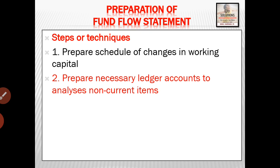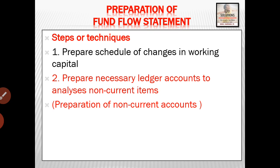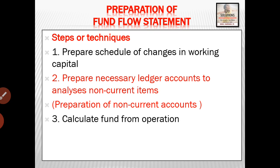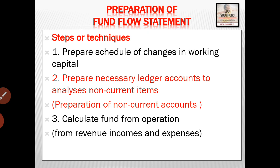The second step is to prepare necessary ledger accounts to analyze non-current items. To analyze non-current items, we have to prepare necessary ledger accounts — that is, we have to prepare non-current accounts. The third stage is to calculate fund from operations. Fund from operations is the profit from revenue, incomes and expenses. And lastly, prepare the fund flow statement.